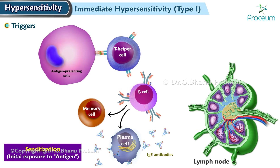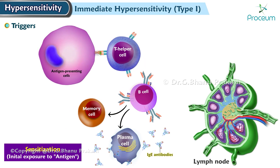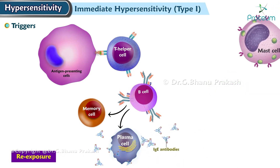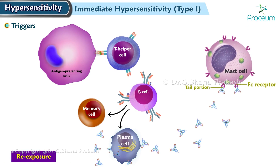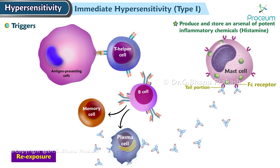In contrast to the antibody-mediated response elicited by bacterial antigens, immunoglobulin E antibodies do not freely circulate. Instead, their tail portions attach to mast cells and basophils, both of which produce and store an arsenal of potent inflammatory chemicals such as histamine in preformed granules.